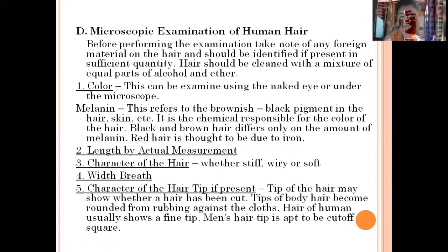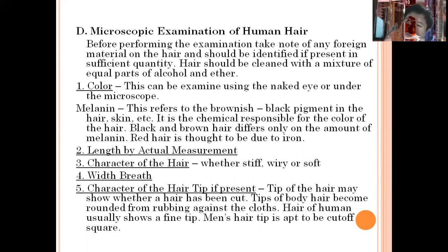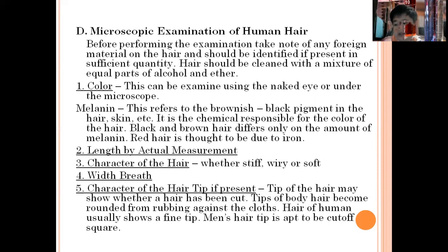For the microscopic examination of hair, the first thing to consider is color. Hair comes in different colors: brown, black, white, blonde, and others. The chemical responsible for the color of our hair is melanin. The absence of melanin in the body causes hair to turn white, which is why older persons experience their hair turning white.